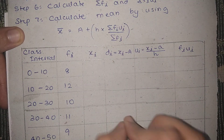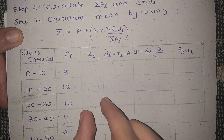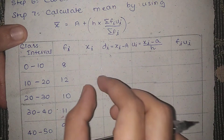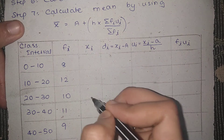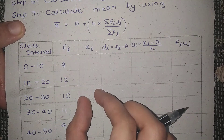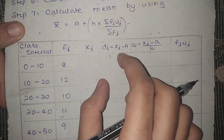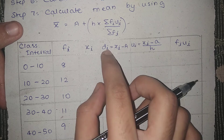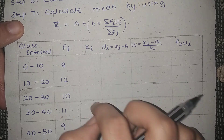We have the assumed mean method. We have to choose a calculation using the assumed mean method. Now we have the class mark. We have to choose a deviation. The deviation is xi minus a, where xi is the class mark and a is the assumed mean.